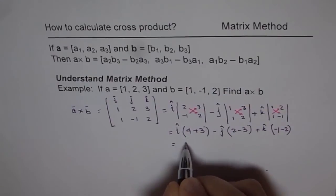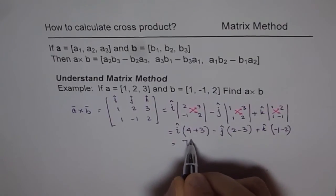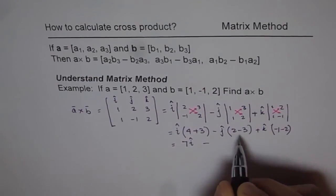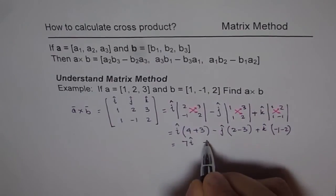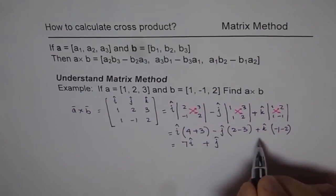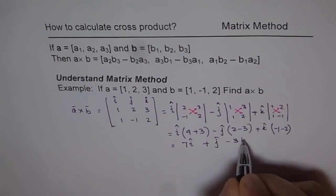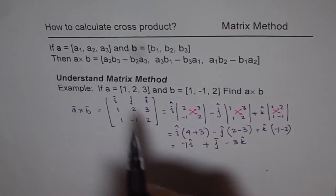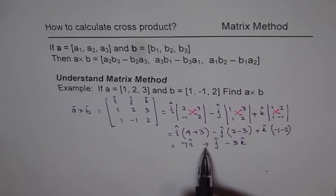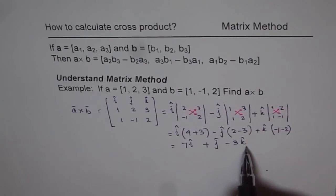And plus k, which is minus 1 and minus 2. And so we get a result which is 7i minus, this is minus 1, so it becomes plus j. And the k is minus 3 here, so minus 3k.